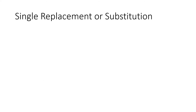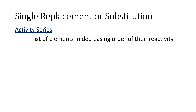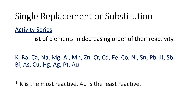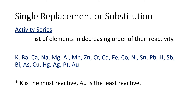For single replacement or substitution, we have to consider the activity series — a list of elements in decreasing order of their reactivity. In this list, potassium is the most reactive while gold is the least reactive.